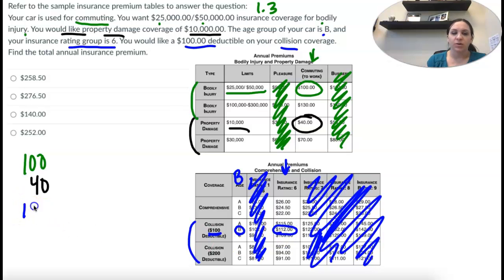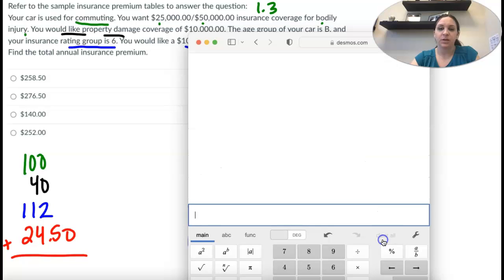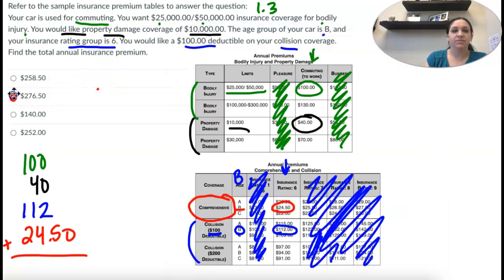Don't forget there's always four numbers when we make insurance. You always have to go through the comprehensive even though it's not listed up there. So comprehensive group B is $24.50, and we're going to add these all up. That's going to be our number. So $100 plus $40 plus $112 plus $24.50 is $276.50 right here.